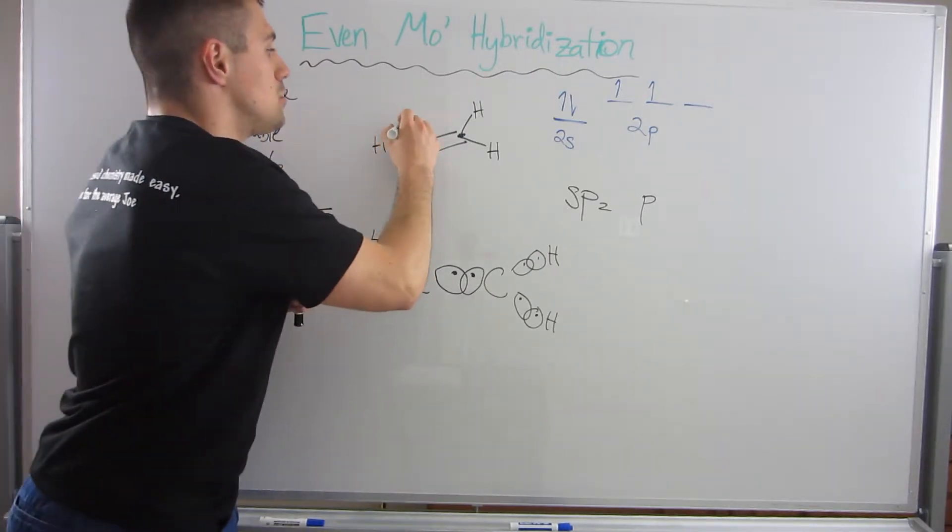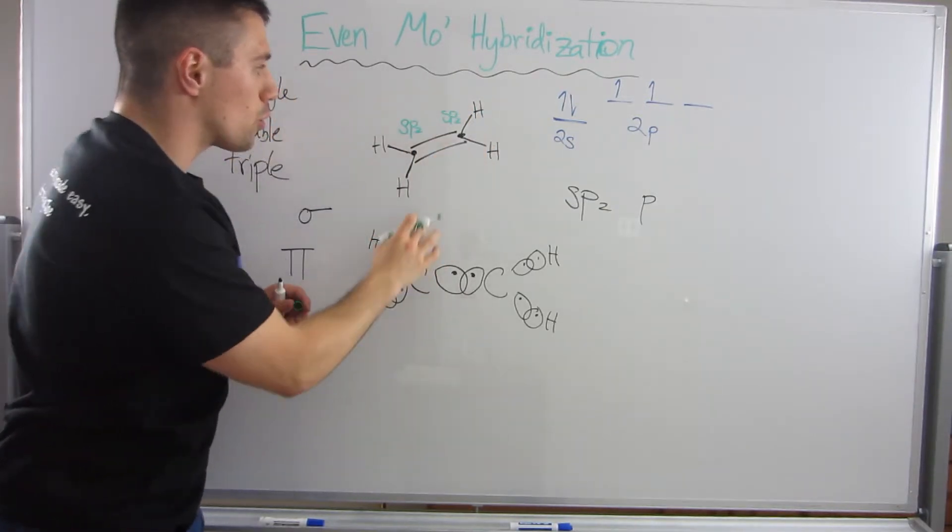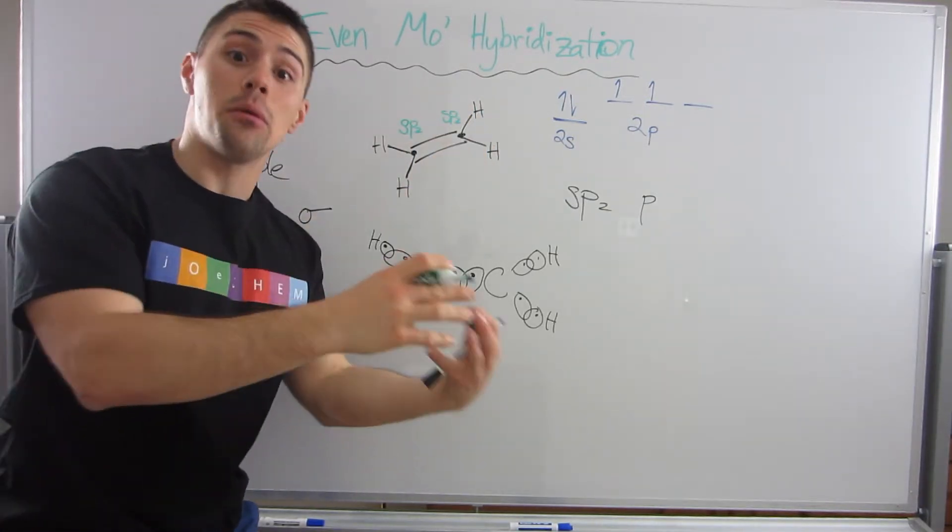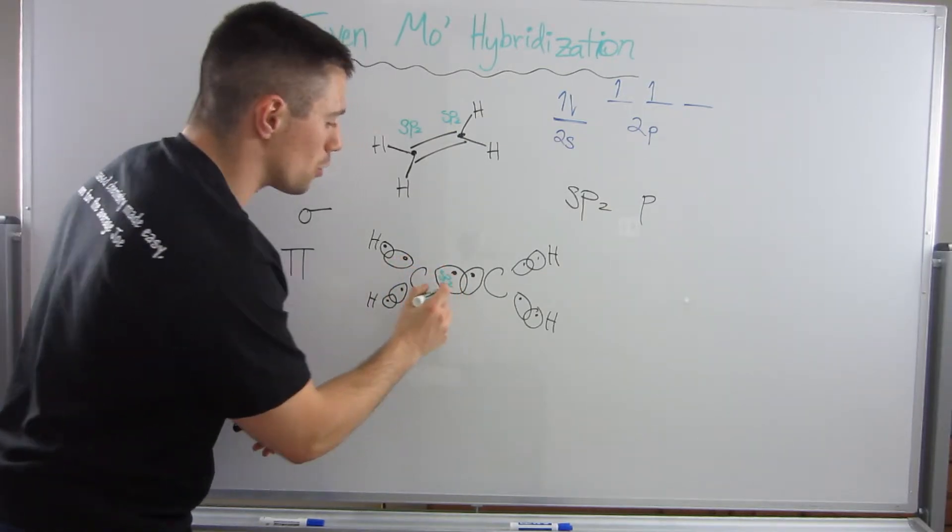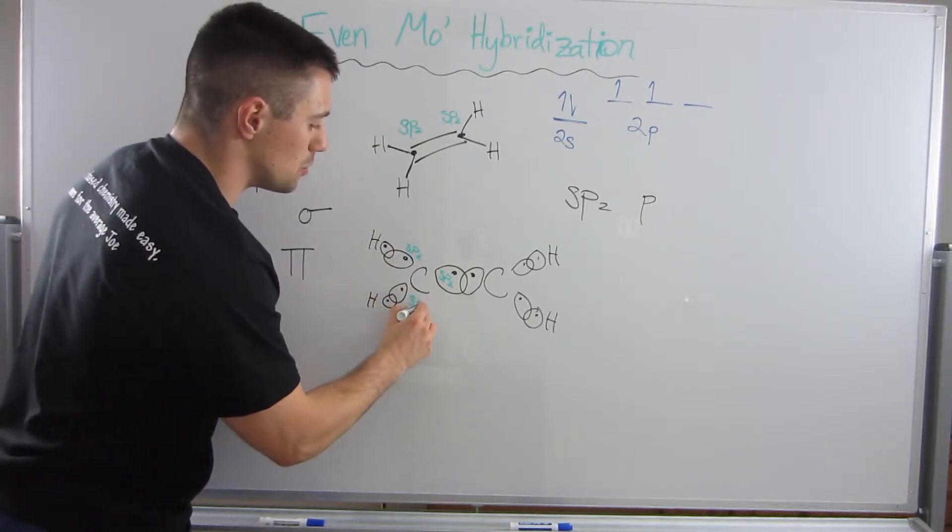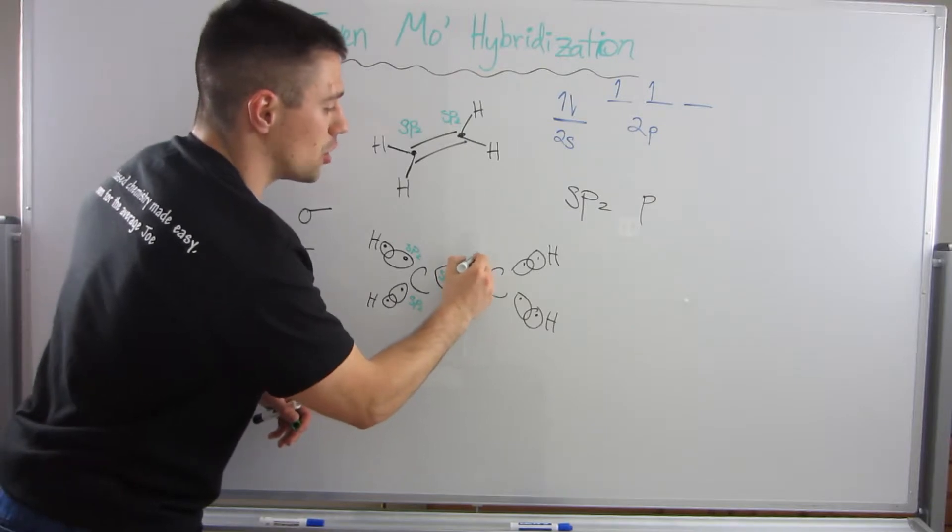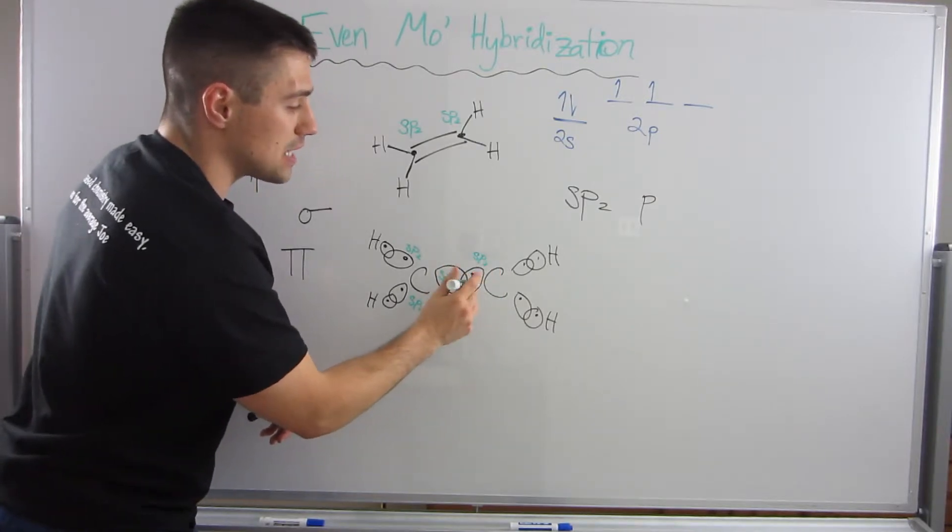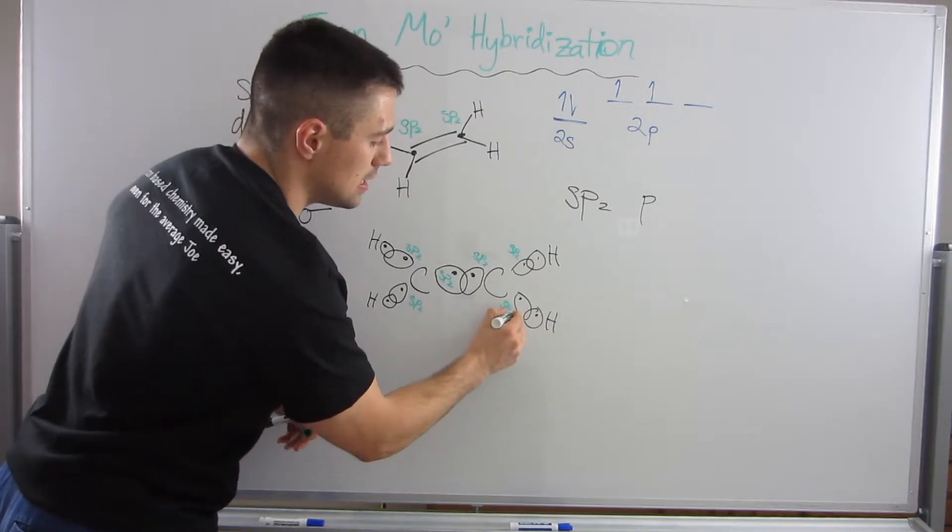These sigma bonds consist of the hybrid orbitals. This carbon, which we said was sp2 hybridized, as well as this one—all of its orbitals that go toward making sigma bonds can be labeled as sp2. This is an sp2 orbital, this is an sp2 orbital, and this is an sp2 orbital. Since this carbon is also sp2, all three of its bonding orbitals are sp2.